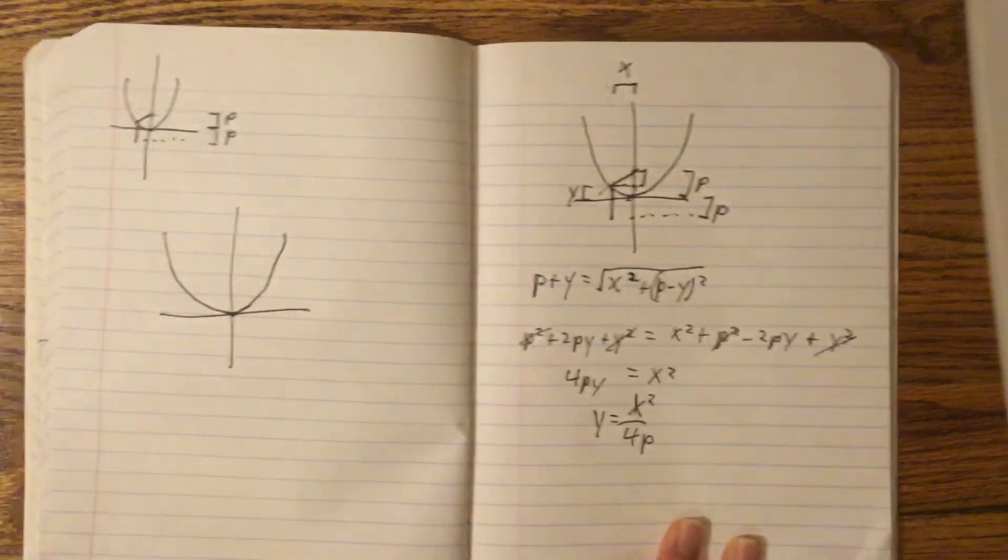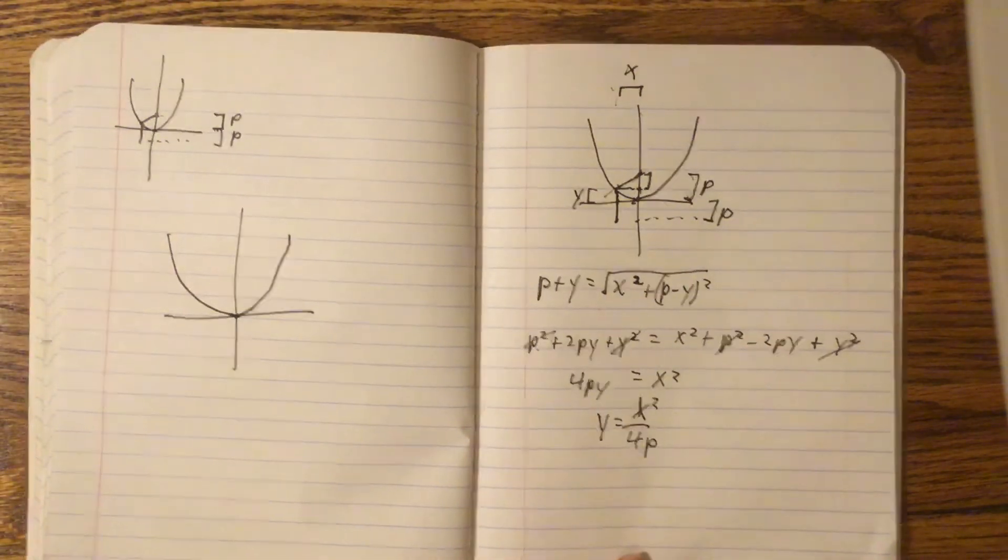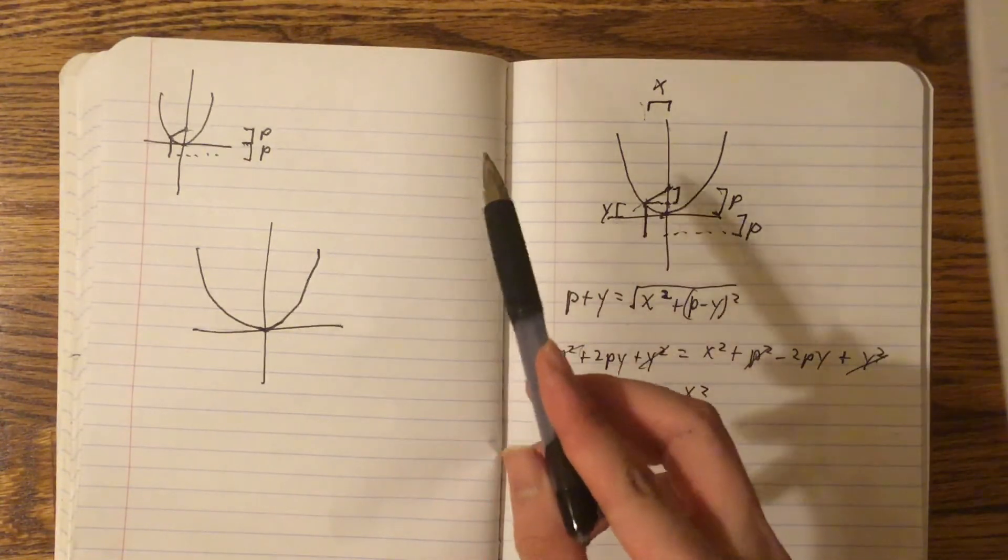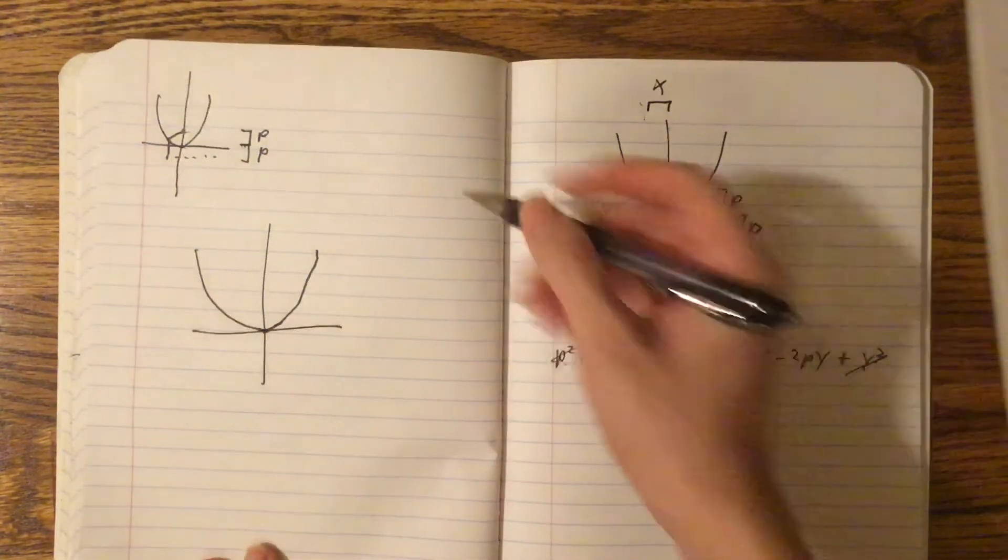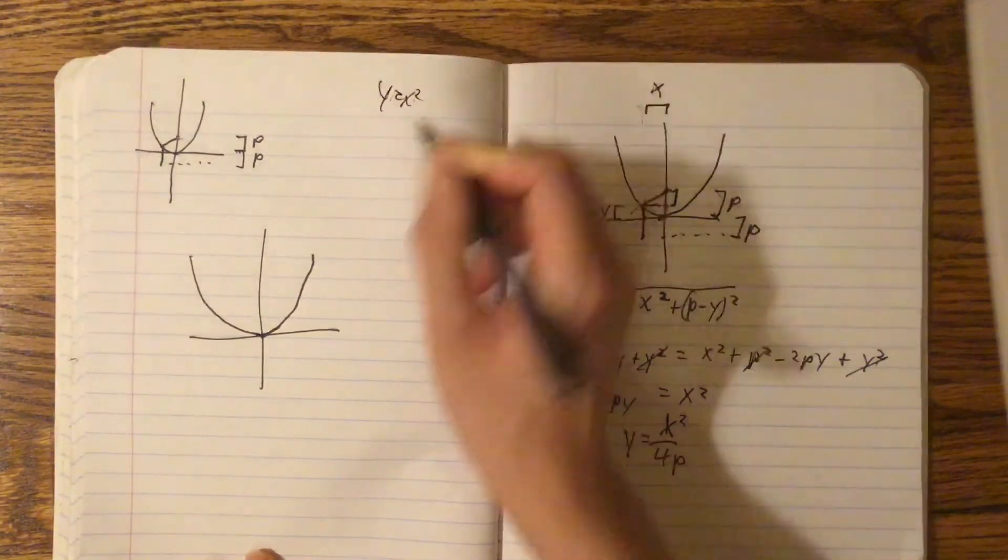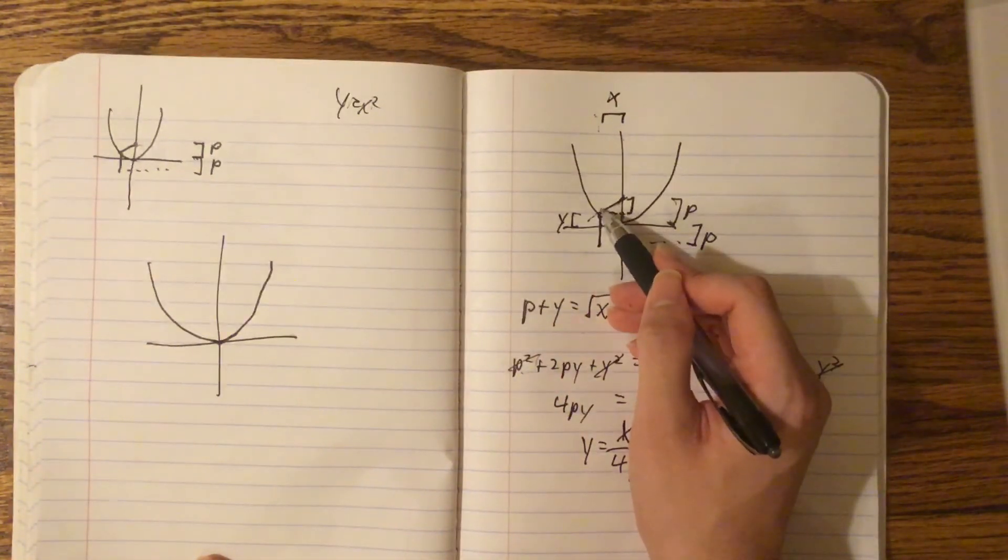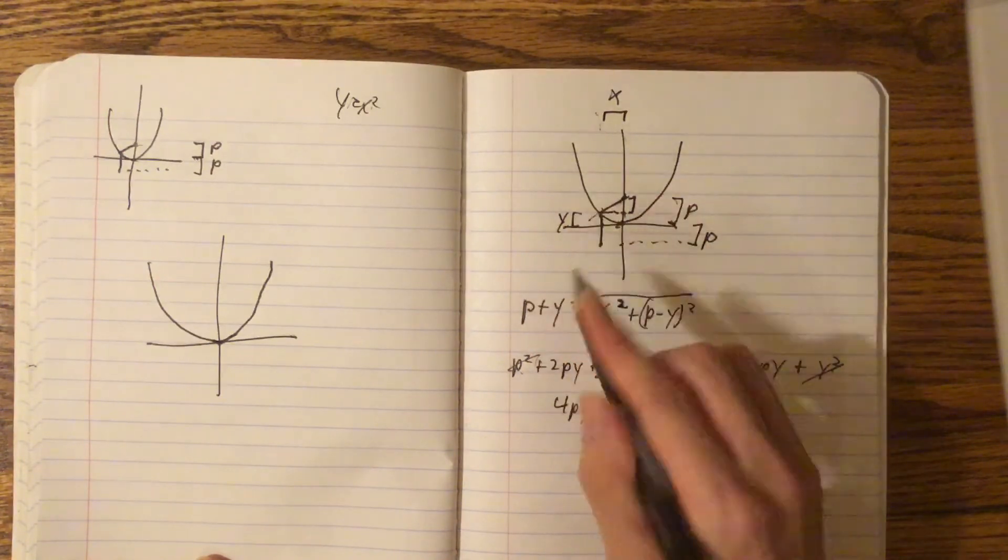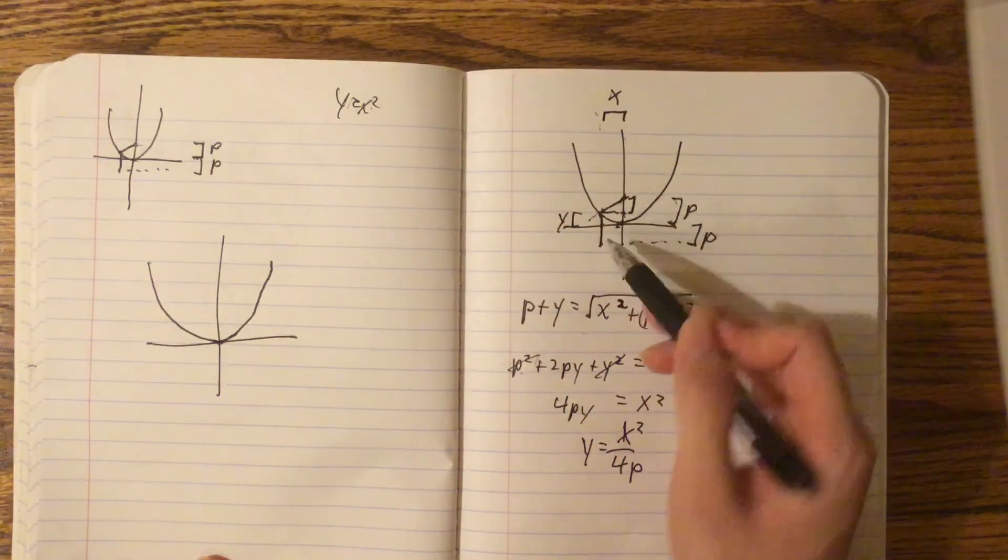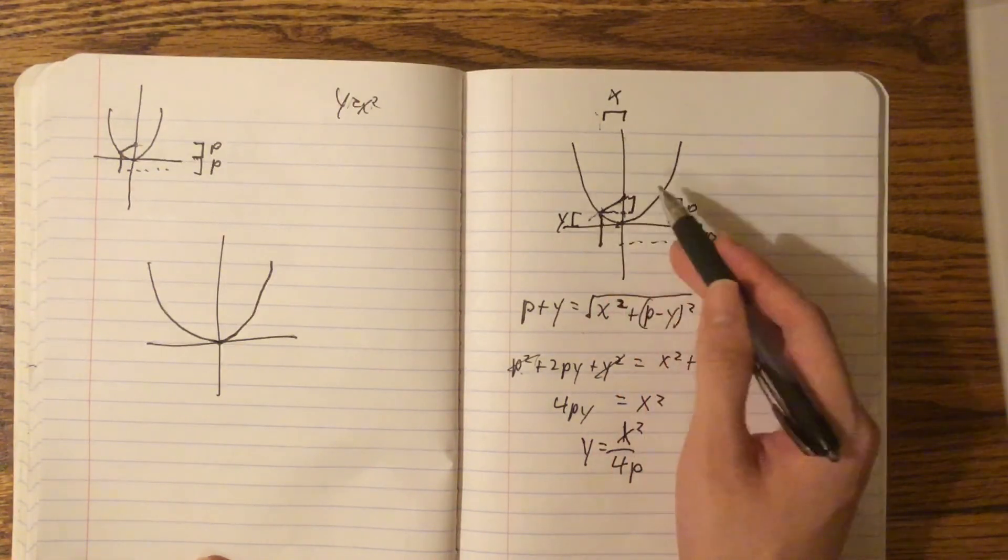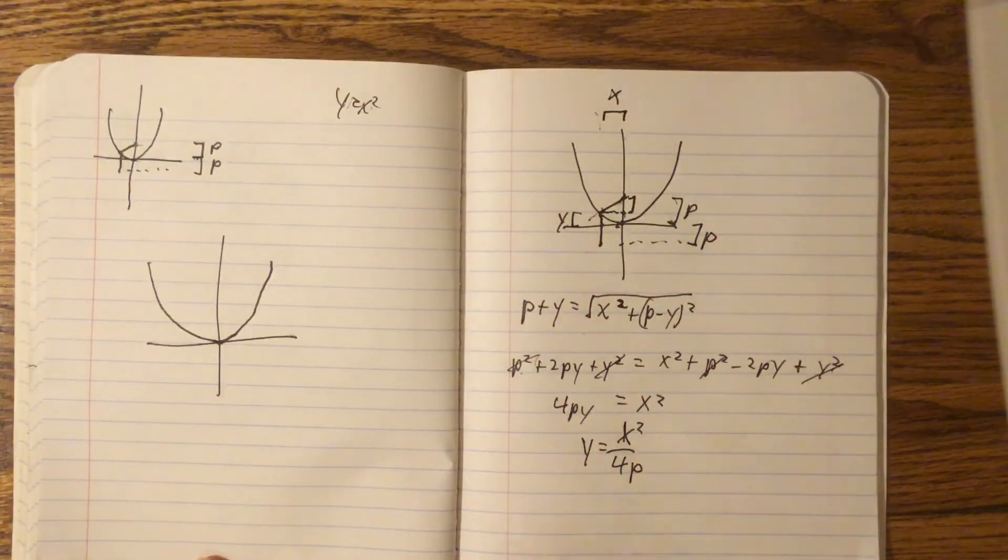So, again, here's how the proof worked. Instead of starting from y equals x squared, I started from the property that the distance from here to here equals the distance from here to here. So, I first started with that property. And then from that property, I derived the parabola. So, that means a parabola must have this property, if that makes sense.